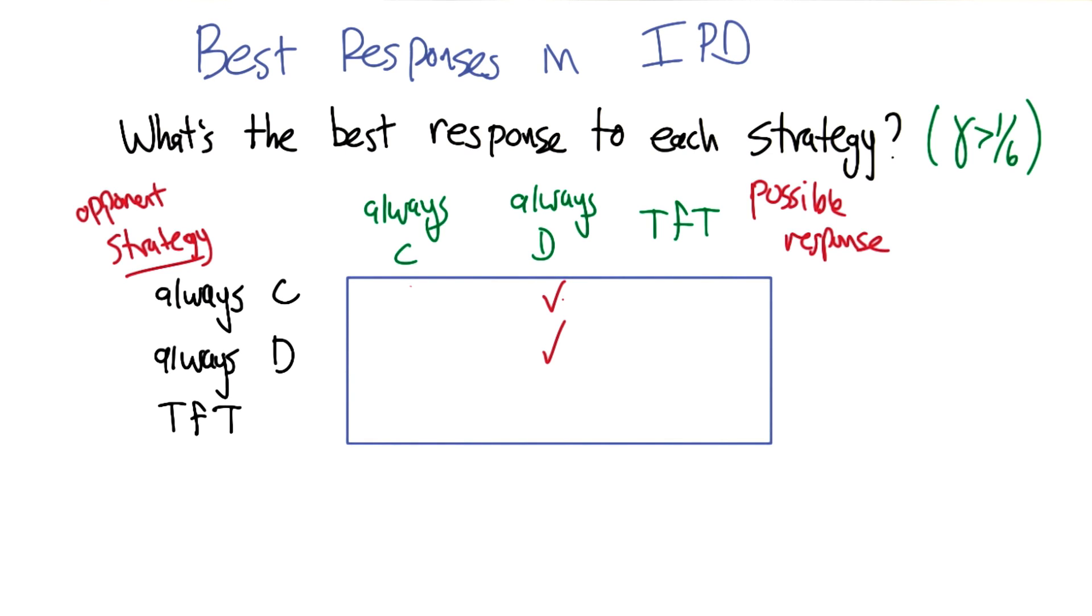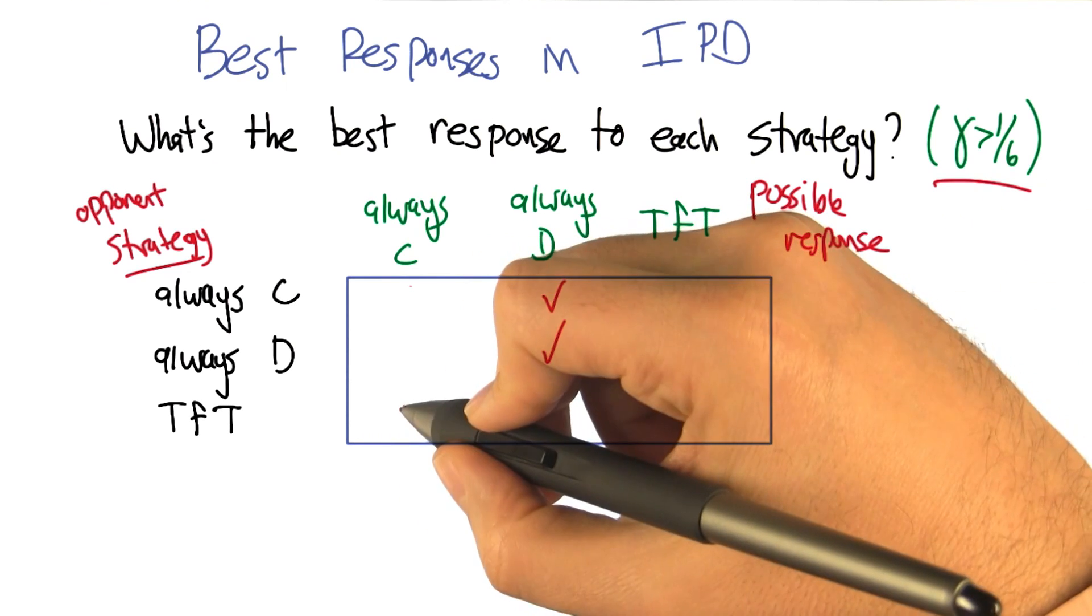Good. All right. So now we have this other strange beast here. So our opponent is playing tit for tat. So we could always defect. Right. But we would get a higher score if we can convince tit for tat to cooperate with us. For a gamma greater than a sixth. That's right. So you should always cooperate. That is true.